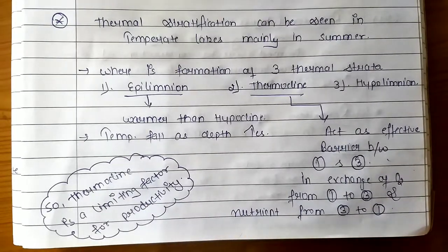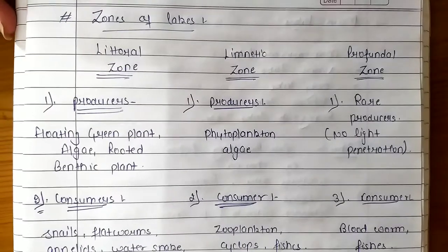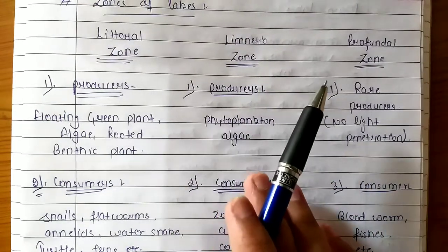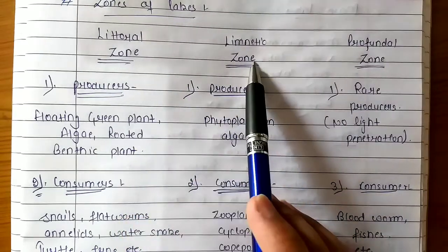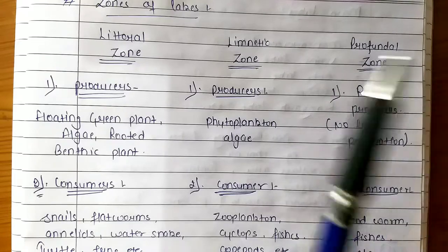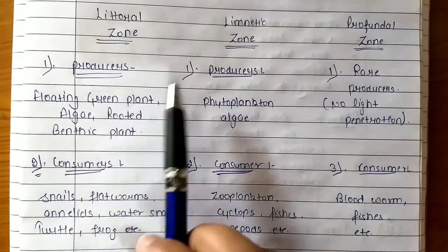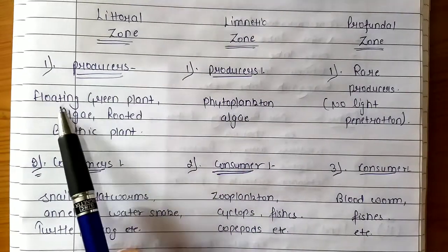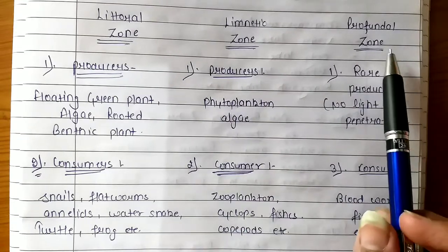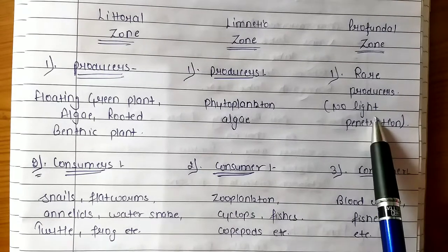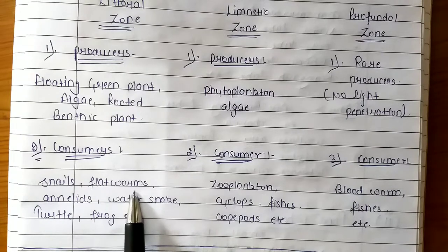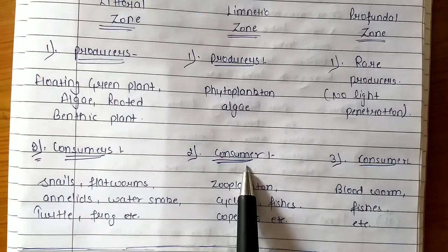Lakes also have zonation. There are different lake zones we have studied earlier: Littoral, Limnetic, and Profundal zones. The Littoral zone is the shoreline/beach zone — here producers are floating-type phytoplankton and algae. In the Profundal zone there is no light penetration so there are no producers. Consumers found in surface water include turtles, frogs, water snakes, flatworms, and annelids.